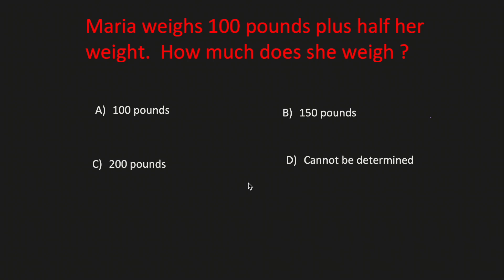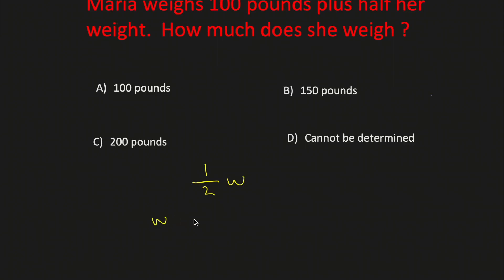Let's use algebra to solve this problem. We'll translate the statement into an equation. Let W be the weight of Maria. Then 1 half W is half of her weight. Her weight is 100 plus half of her weight.